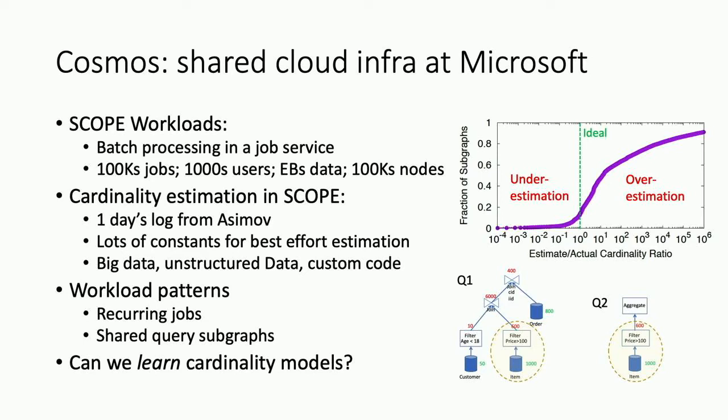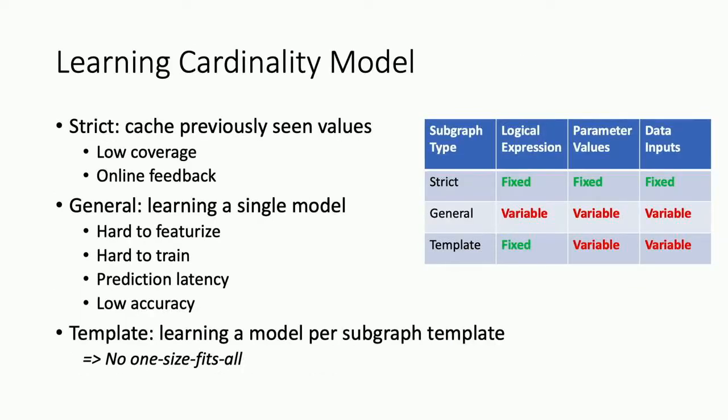The easiest approach is to simply cache results: record cardinality values and reuse them next time. But coverage is very low because inputs change. Feedback has to be online and immediate. The other extreme is learning a single general model for any sub-graph — but that's very hard to featurize, hard to train, has high latency when scoring due to large feature vectors, and we had very low accuracy. We could not fit a single model for all cases.